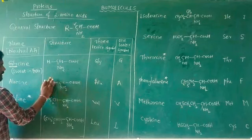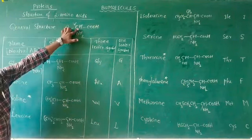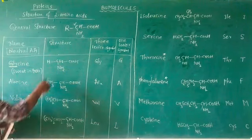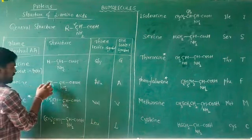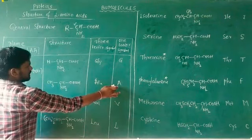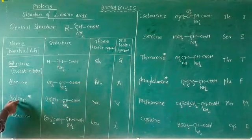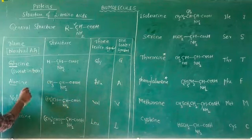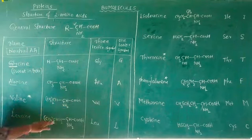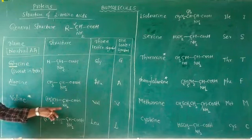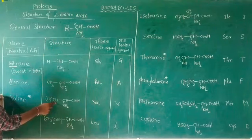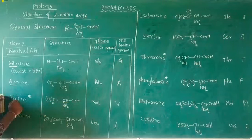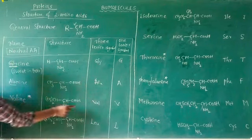Another neutral amino acid is alanine, where R is a CH3 group. It has one amino group and one COOH group. Three-letter symbol is ALA and one-letter symbol is A. Another neutral amino acid is valine, where R is an isopropyl group. Three-letter symbol is VAL and one-letter symbol is V.